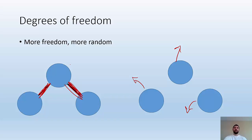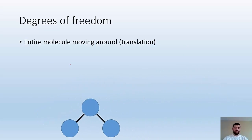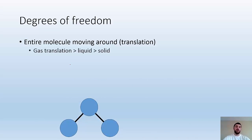We're going to look at these degrees of freedom more specifically. You can have the entire molecule moving around, known as translation. So that's one degree of freedom. It can move as a whole thing from one place to another. The translation in a gas is greater than the translation that can occur in a liquid, which is greater than the translation that can occur in a solid. So that's part of the reason why gases have much higher entropy than solids, because they have more freedom. They can move around more.